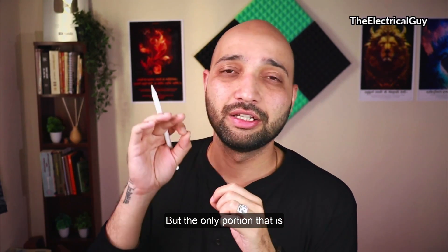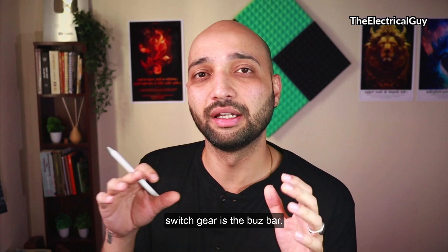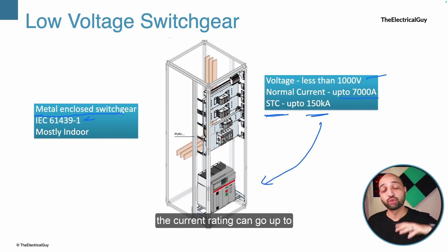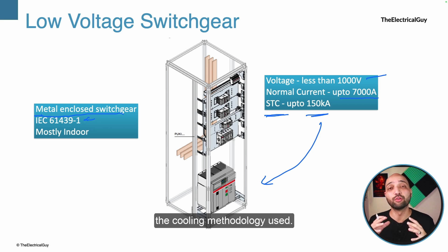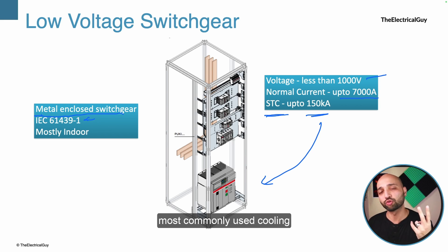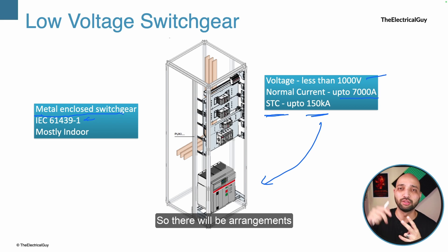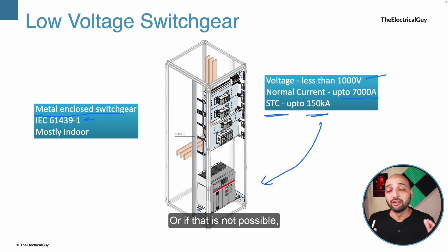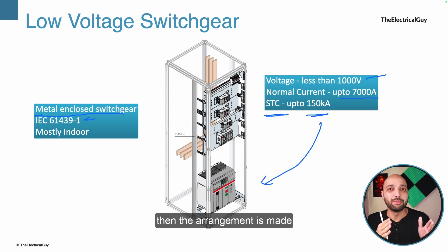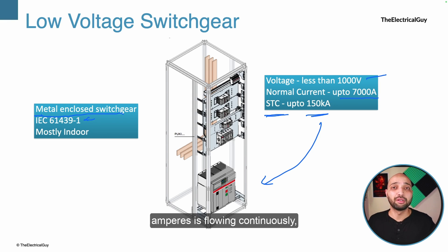The vital area in low voltage switchgear is the bus bar. Since normal current can go up to 7000 amperes, there will be significant heating issues. The cooling methodology is therefore a very focused area. There are two commonly used cooling technologies: natural cooling, where arrangements circulate natural air through the panels to keep temperature within limits, and artificial cooling using fans. With 7000 amperes flowing continuously, it generates a lot of heat not only in the bus bar but across the complete panel.